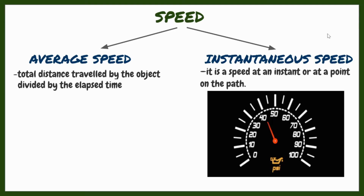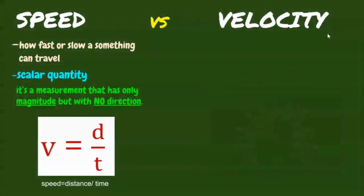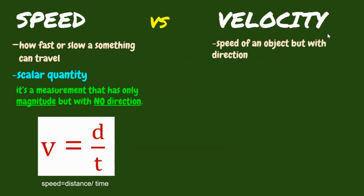Now, let's head into velocity. Let's make it simple. Velocity is the speed of an object but with direction. Since magnitude and direction are involved, velocity is a vector quantity, the same as displacement.